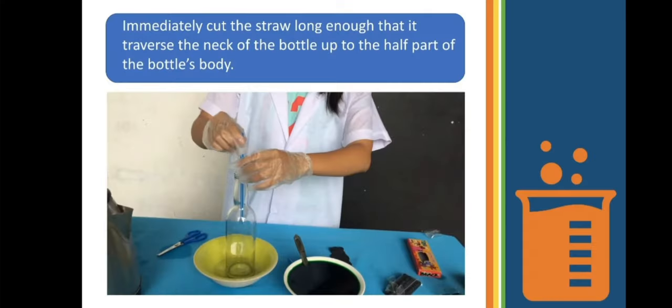After that, we immediately cut the straw long enough that it traverses the neck of the bottle up to the half part of the bottle's body. Some of your experiments didn't work because I noticed your straw was too long, reaching the bottom of the bottle. That's why the water had a hard time traveling inside the bottle, and the air inside wasn't exposed to the outside air. That's one of the deficiencies I've seen in some of your experiments.